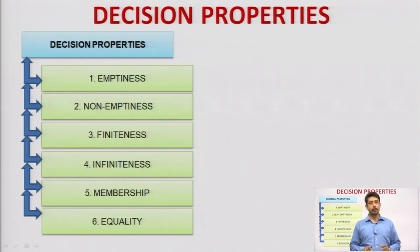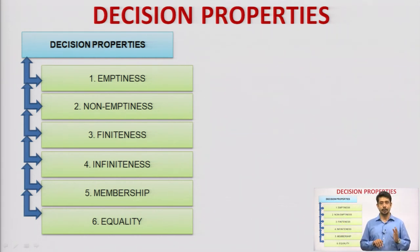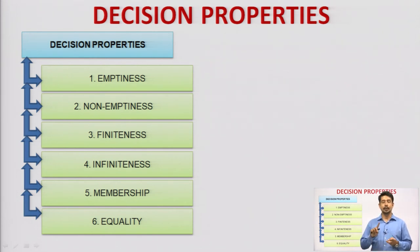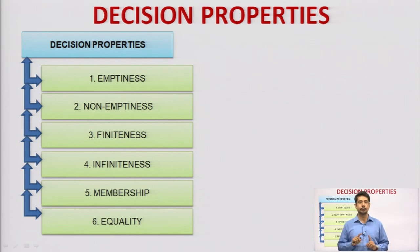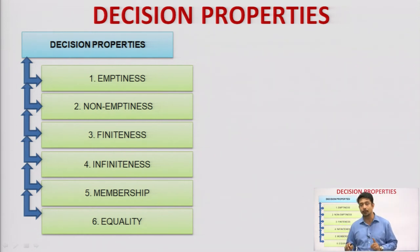These are the different closure properties we have understood so far: Kleene closure, positive closure, union, intersection, complement, and concatenation — six operations in total. Homomorphism, inverse homomorphism, and one more topic we will be looking at in the end.